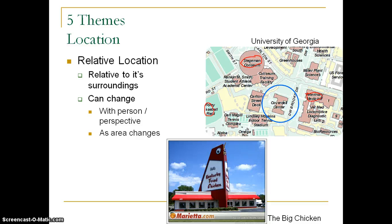Relative location can also change as an area develops. In the area where the instructor lives, new roads and development have changed relative descriptions. For example, a school that couldn't previously be described relative to a shopping development — 'the Avenues at Forsyth' — can now be described as south of it, since it was built nearby. Depending on which side of town you're familiar with, you'll give different landmarks and directions. Relative location is highly personal and certainly not as precise as absolute location.